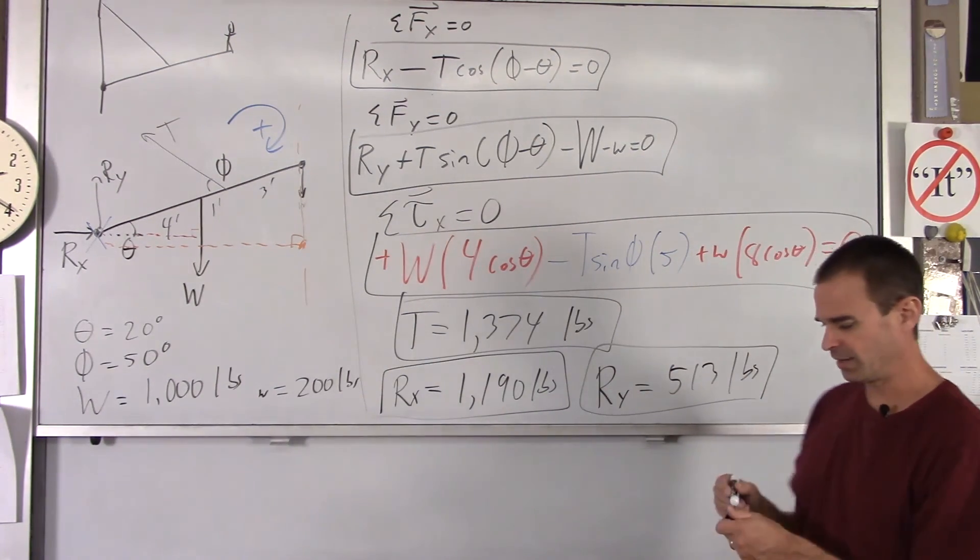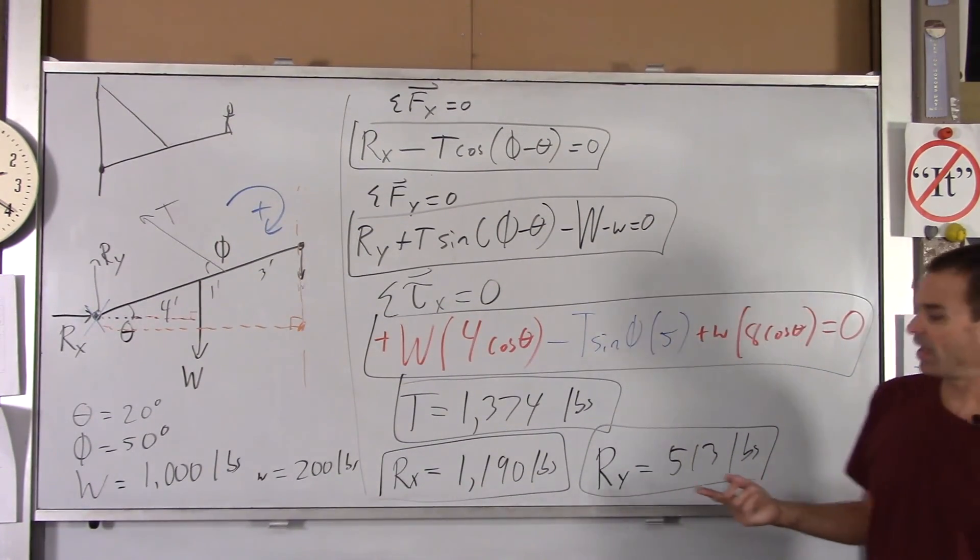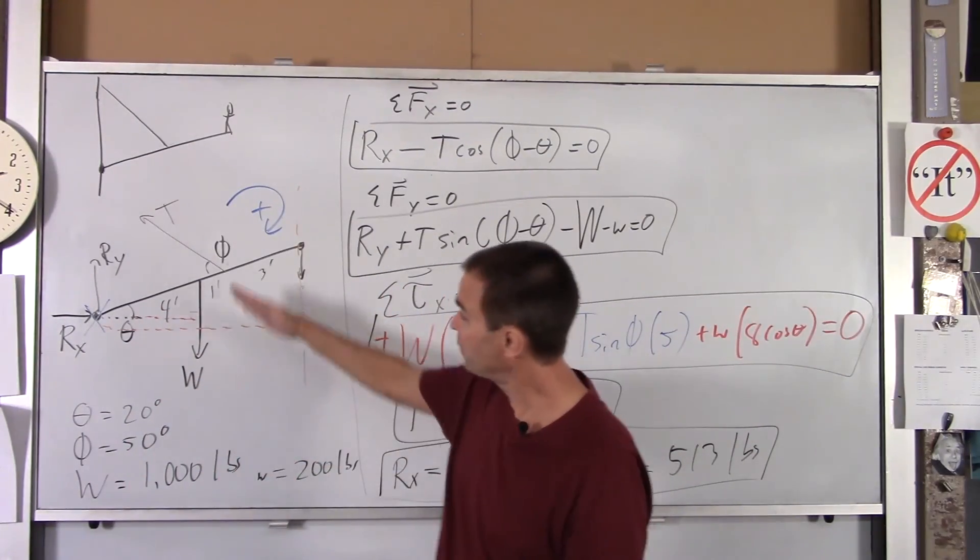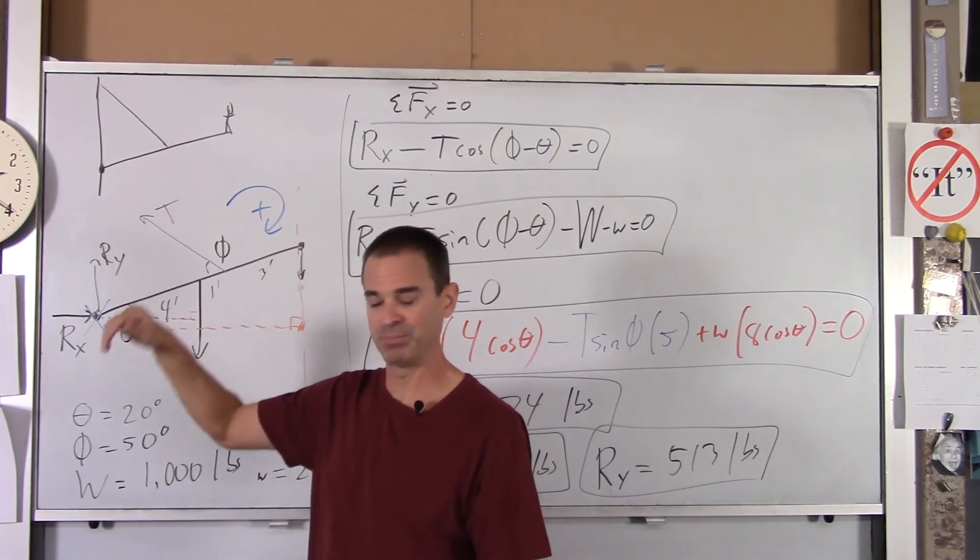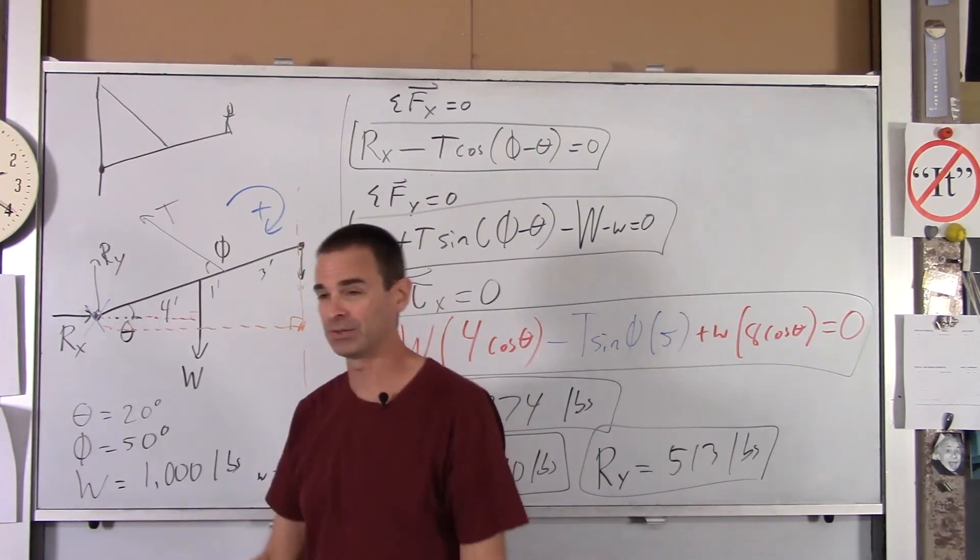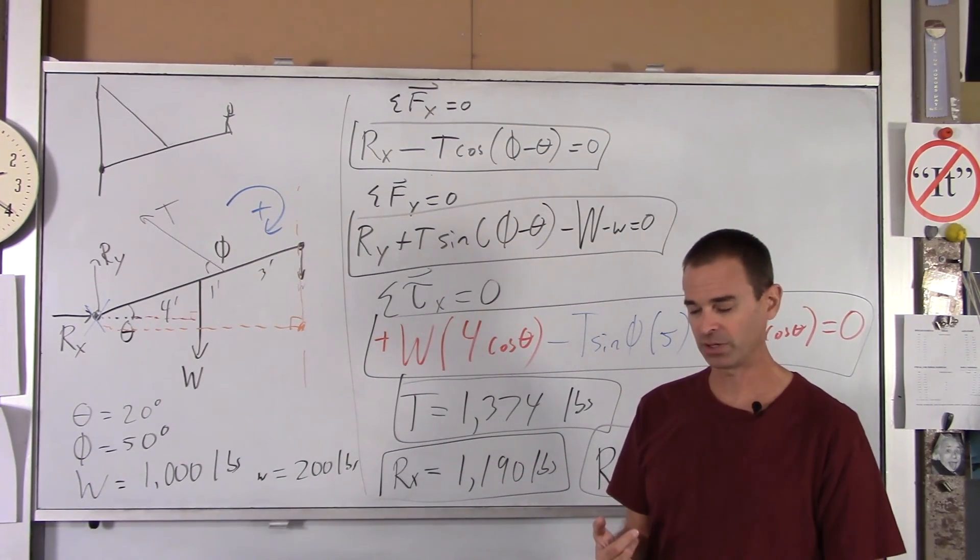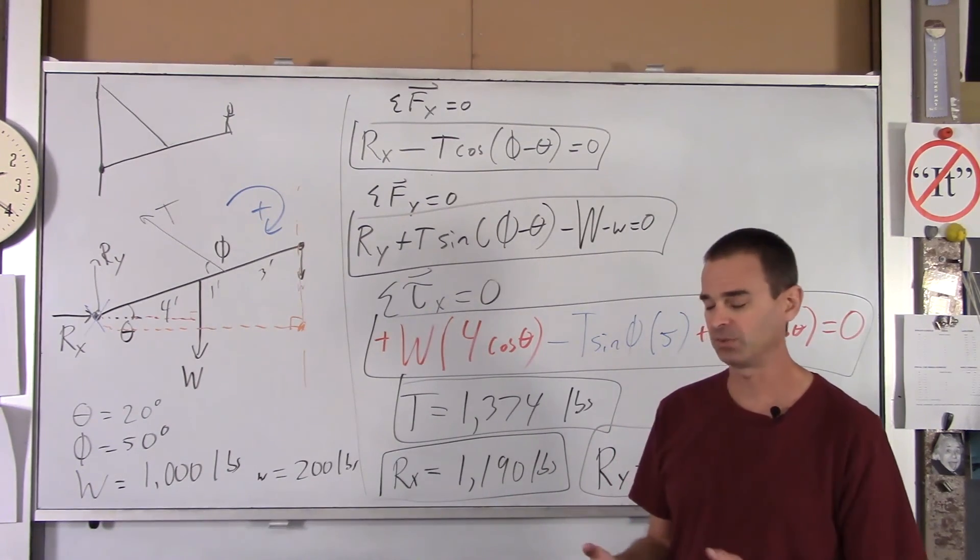So by the way, in that case, we guessed right. We guessed that Ry would be up. In this case, we got up. If you moved the tension in, if you put this attach point there, it would be the other way. Ry would point down. So that's an example of using net force and net torque to calculate unknown forces in a situation.